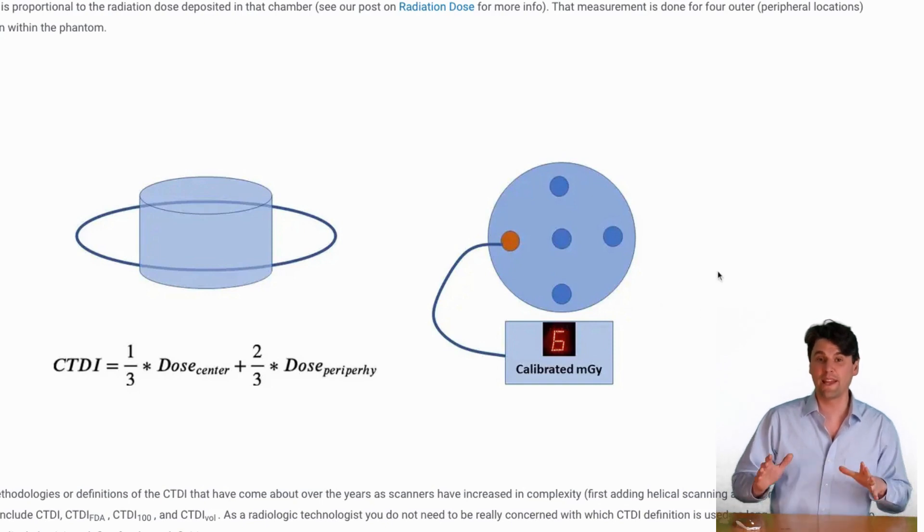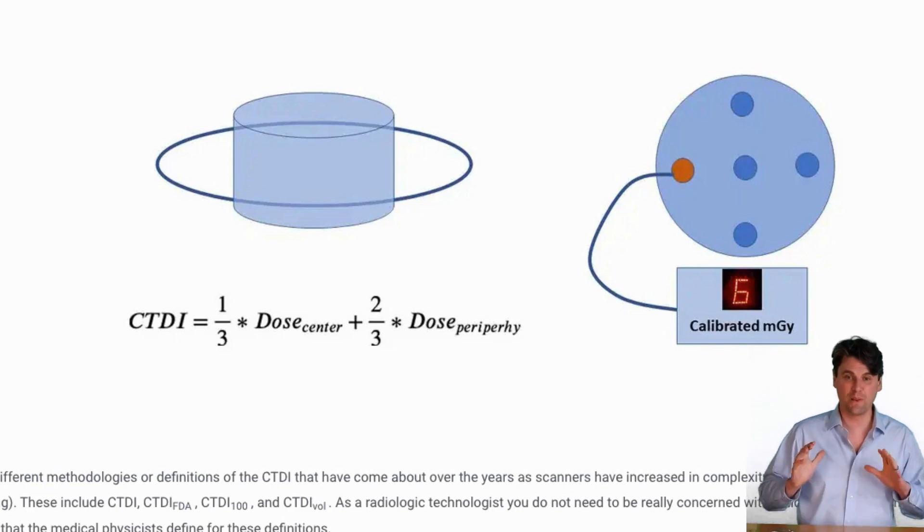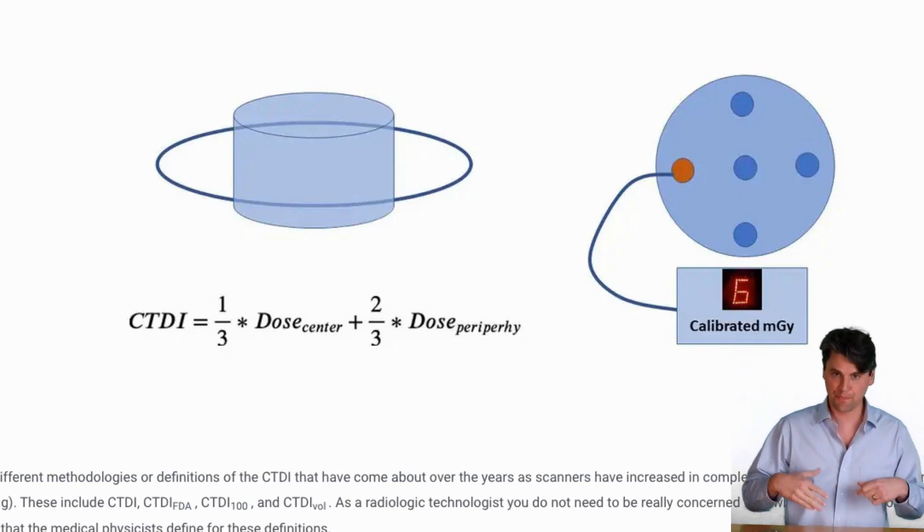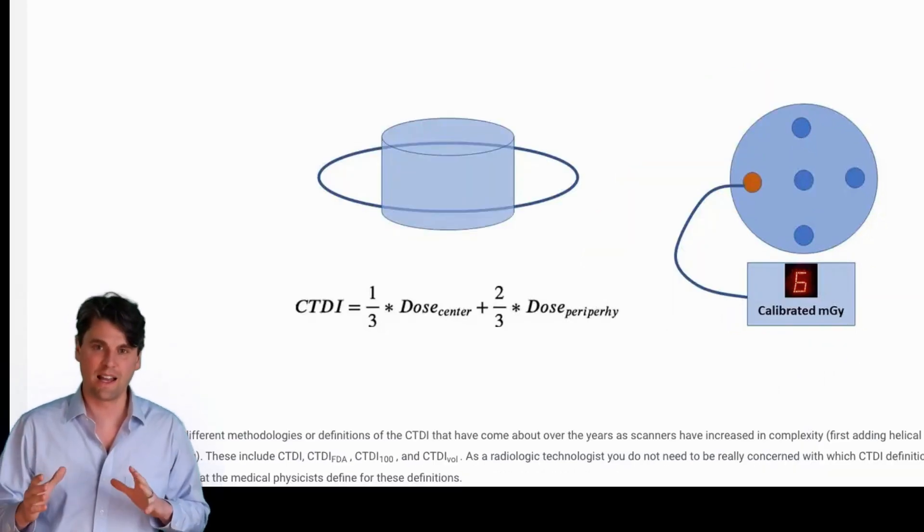The CTDI is a weighted combination of the outer measurement and the inner measurement. We call these periphery, the ones on the outside, and the one in the middle is the center measurement. It's a weighted combination between the outer and inner measurements, all made with the same ion chamber.